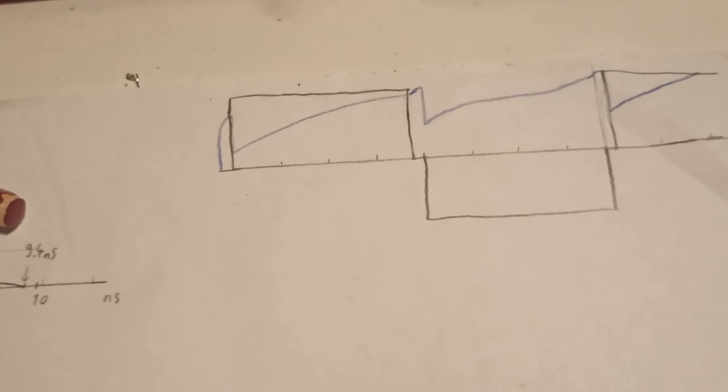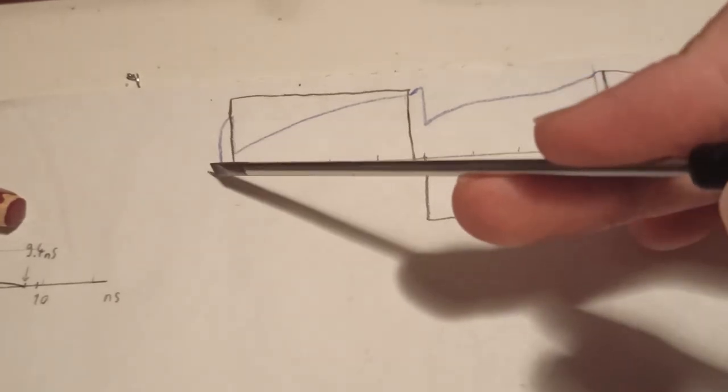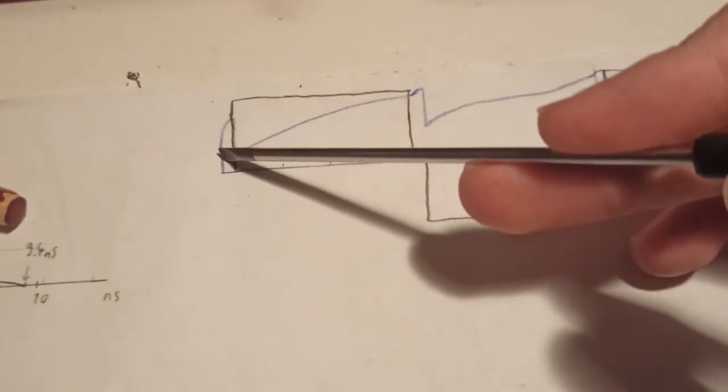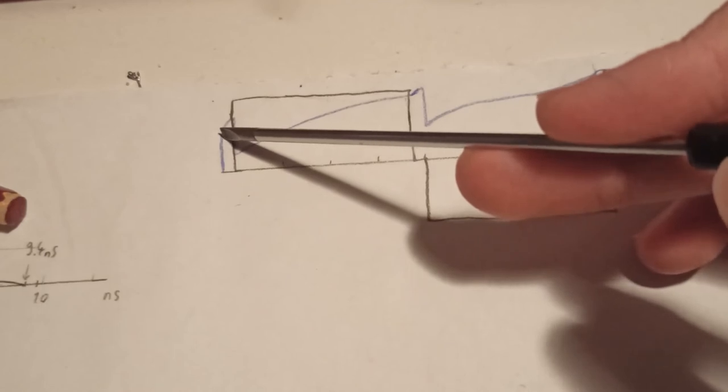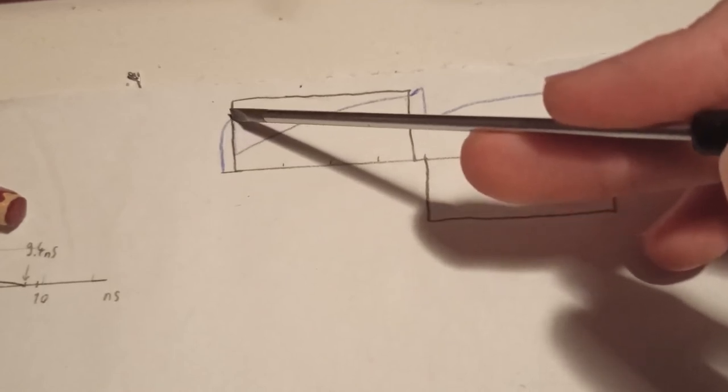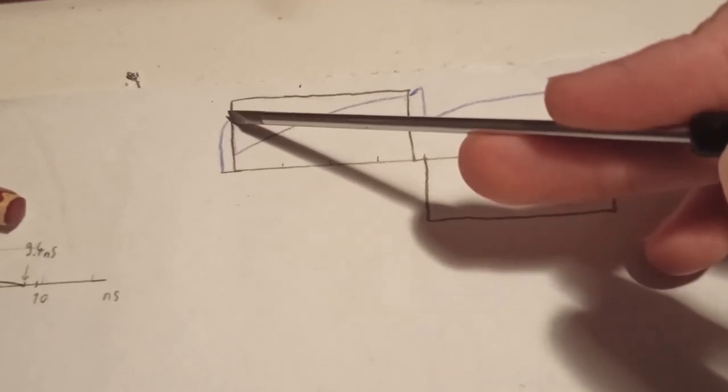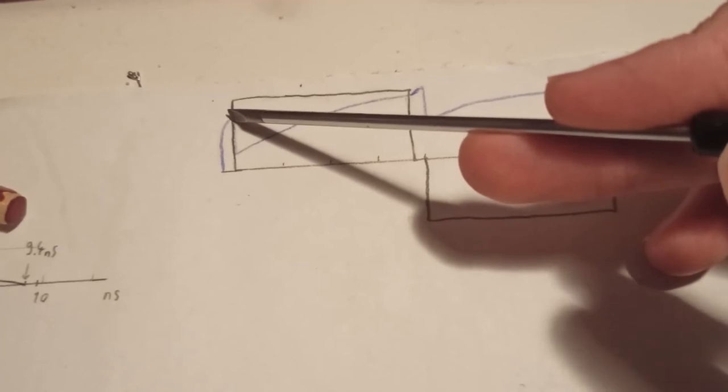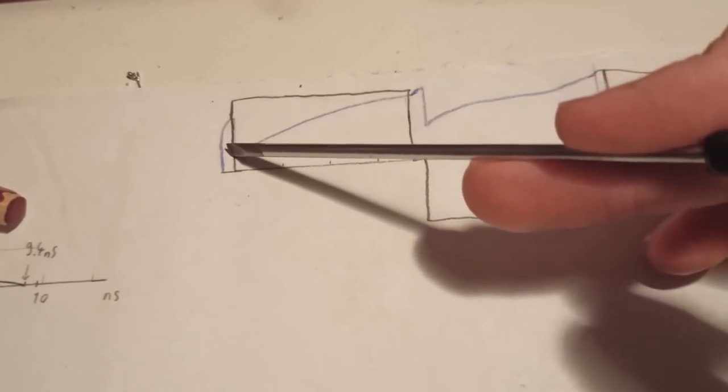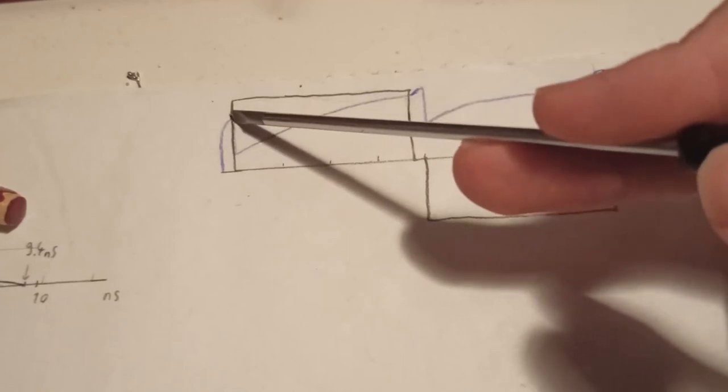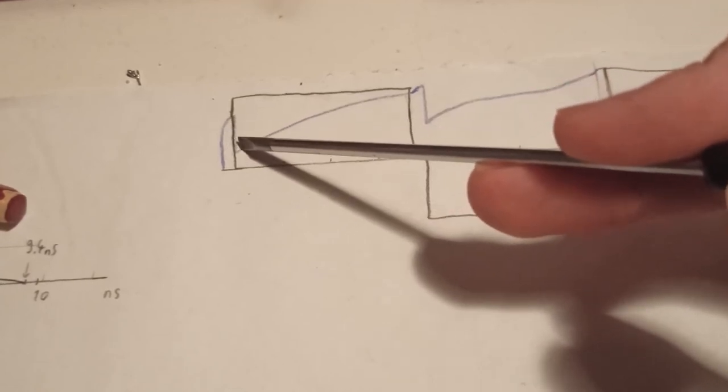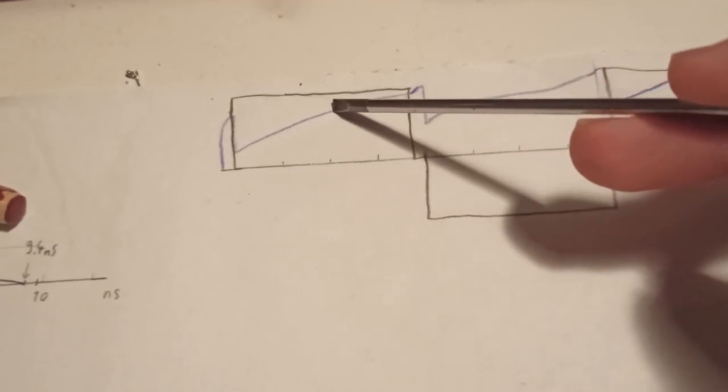The waveform on the floating ground capacitor will look something like this, so it will charge up through the 75 ohm resistor. And then when it turns on the gate of the transistor, the voltage will drop, and then it will slowly go back.